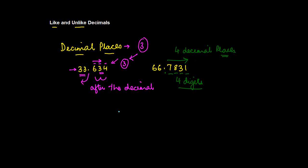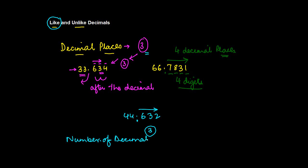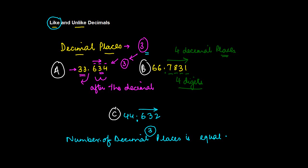Let me take another example to complete the picture. Let's say I take 44.632 — how many decimal places are there? The number of digits after the decimal point: there are three. Now in the case of like decimals, the number of decimal places is equal. So if I name these three numbers as A, B, and C: in A we have three decimal places, in B we have four, and in C we have three.